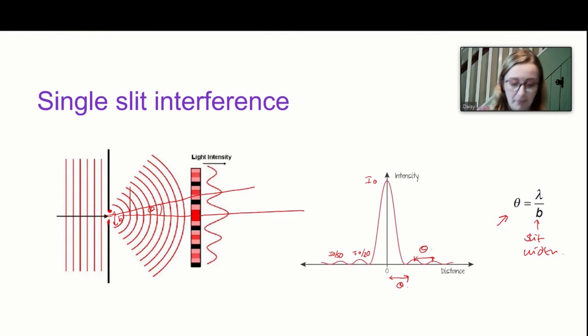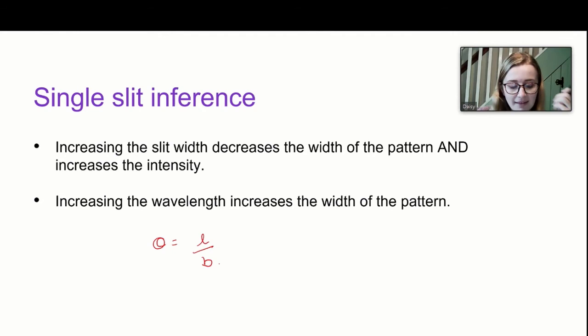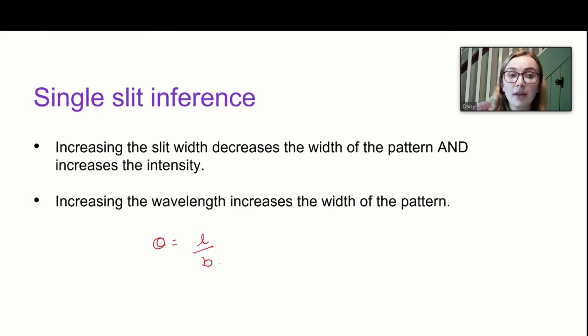Using θ = λ/b: if we increase slit width b, we decrease θ and therefore narrow the pattern, but more light gets through so the whole pattern has higher intensity. If we increase the wavelength λ, we increase θ and make the pattern wider. This is really interesting when we shine white light — which is composed of the whole spectrum — through a single slit.